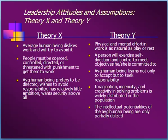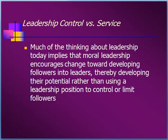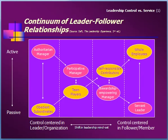Hopefully you've run into some managers that fit that bill. The next section is Control vs. Service — are we leaders who seek control, or are we leaders who exercise service? You can pause and read this slide. I'd like to explain this continuum of leader-follower relationships. We have two axes in this slide: the vertical on the left is passive vs. active leadership, and the horizontal axis on the bottom is control centered in the leader or the organization versus control centered in the follower or member of the organization. You can see the interplay between the manager and the subordinates in this graphic. We'll stop and go to the second section.